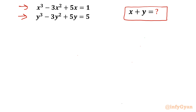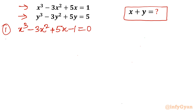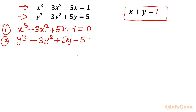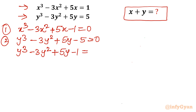Let us get started by rewriting equations 1 and 2. Equation 1: x³ - 3x² + 5x - 1 = 0. Equation 2: y³ - 3y² + 5y - 5 = 0, which we can further rewrite as y³ - 3y² + 5y - 1 = 4.